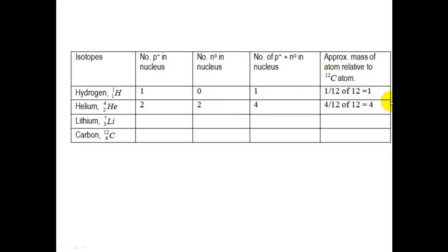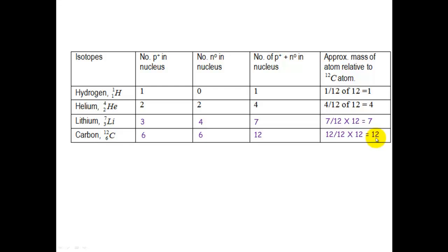We can now look at the relative mass of different atoms. For lithium, we work out the number of protons and neutrons — which gives us the mass number — and calculate 7/12 × 12 = 7. That is the mass of an atom relative to carbon-12. For carbon, that obviously works out to 12, because carbon-12 equals 12. Everything else is relative to carbon-12.